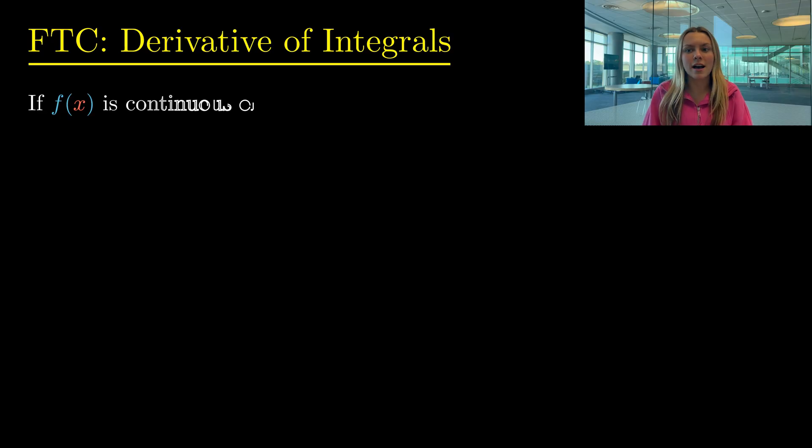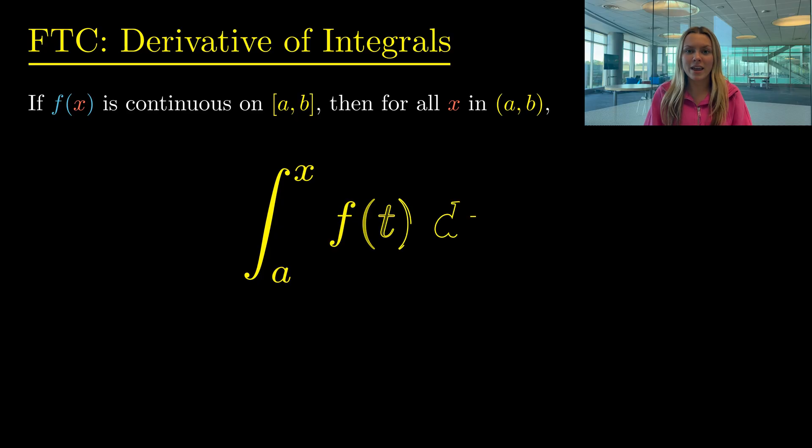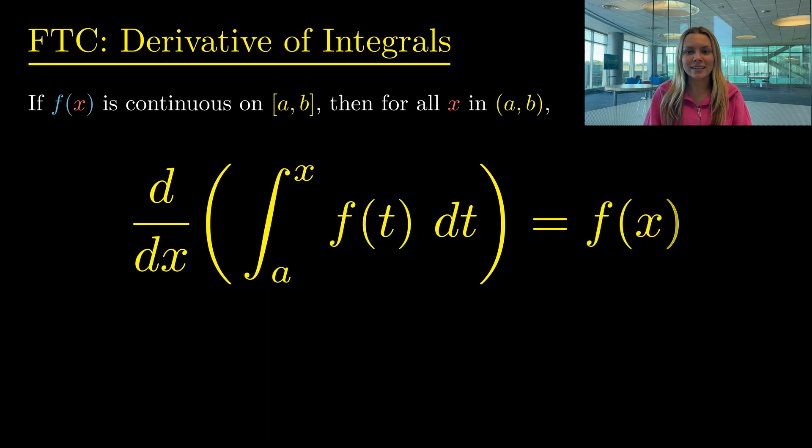Well, let's say we have a function f(x) that is continuous on the closed interval [a, b]. Then for all x in the open interval (a, b), we can define another function that is the integral of f(t) from a to that x. And if we take a derivative of this new function that is defined as an integral, the result is simply f(x).